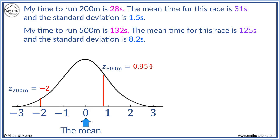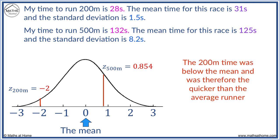Negative z-scores mean that the data point was less than the mean. When running a race, we want a low time, and so the z-score of minus 2 is significantly below the mean, and is therefore a better time than the z-score for 500 metres, which is actually above the mean.